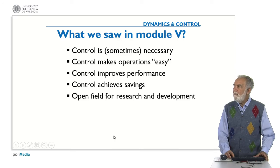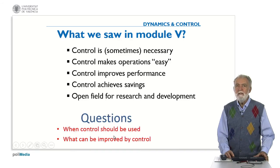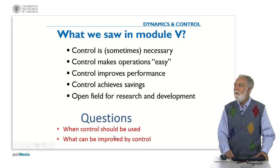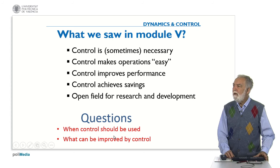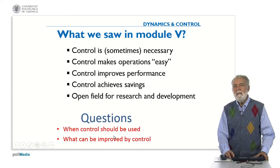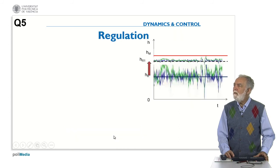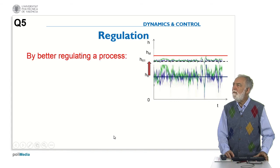So this is what we saw in module 5, and the questions that we are facing today are: when should control be used, and what can be improved by control? In this last question we analyzed the use of control to improve the regulation.